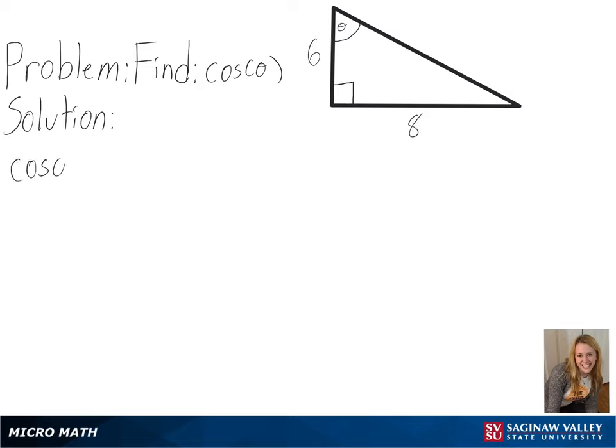Our problem is to find cosine of theta. To find our cosine value at this angle, we will need to find the length of the adjacent side over the length of the hypotenuse. We already know our adjacent side is 6,